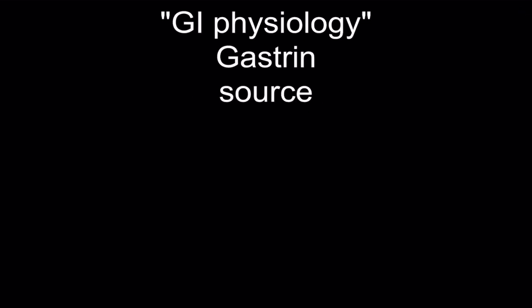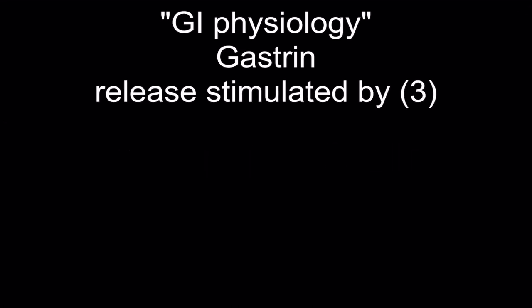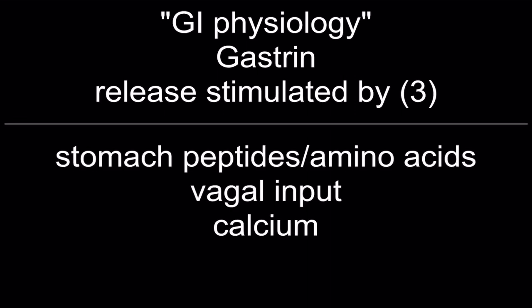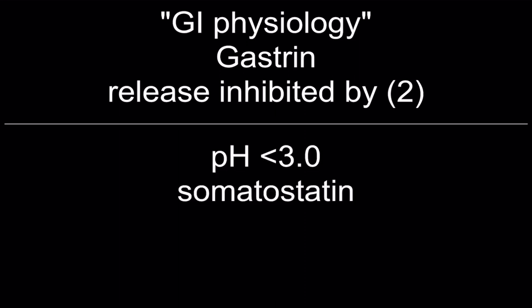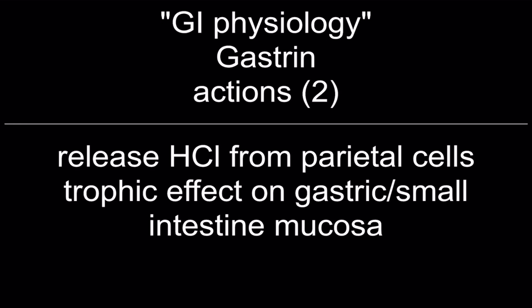Gastrin — source: gastric antrum G-cells. Release stimulated by: stomach peptides, amino acids, vagal input, and calcium. Release inhibited by: pH under 3.0 and somatostatin. Actions: releases hydrochloric acid from parietal cells and has a trophic effect on gastric and small intestine mucosa.